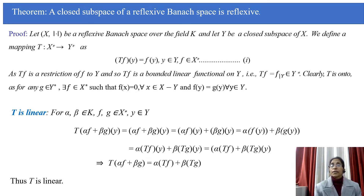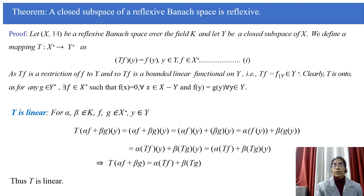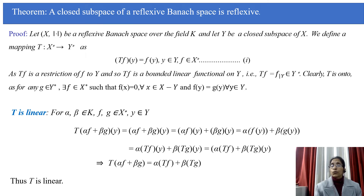We also note that T is onto, because for any g in Y*, there exists f in X* such that f(x) = 0 for every x in X minus Y, and f(y) = g(y) for every y in Y. So clearly this mapping is onto.